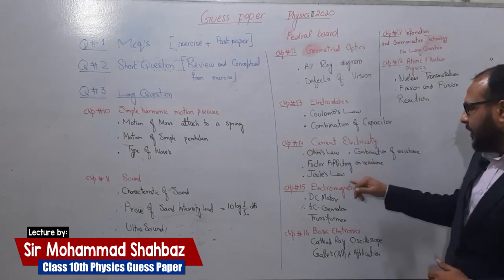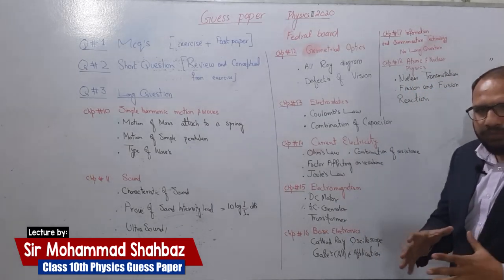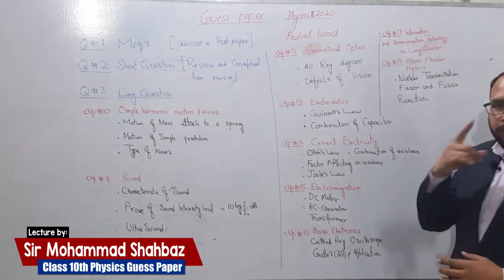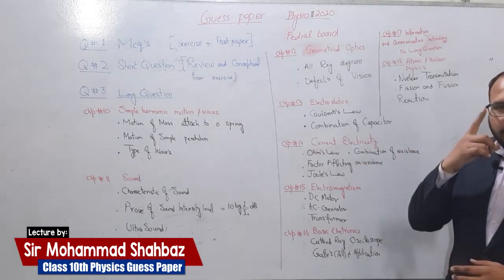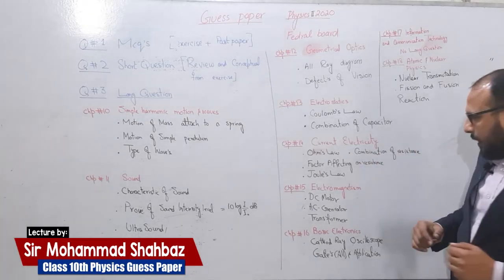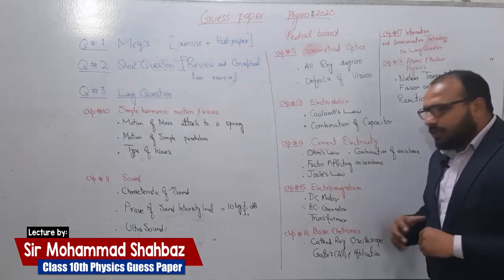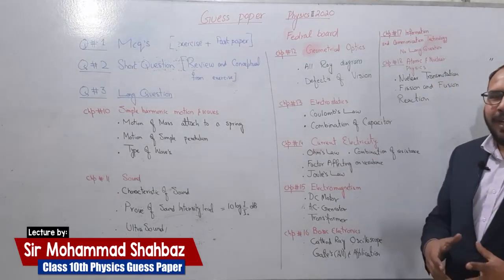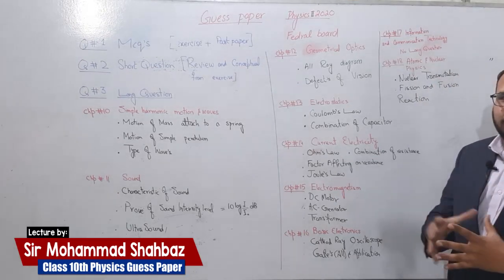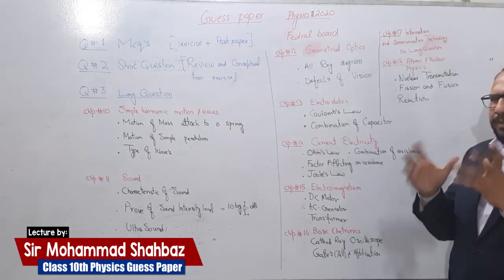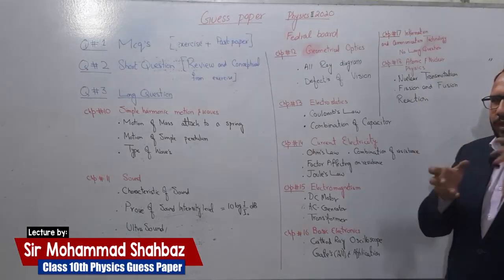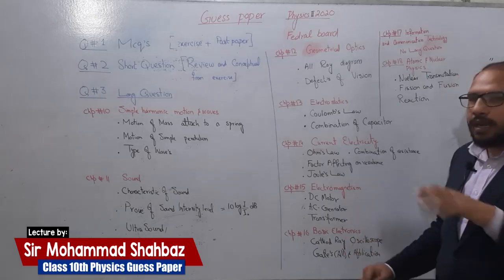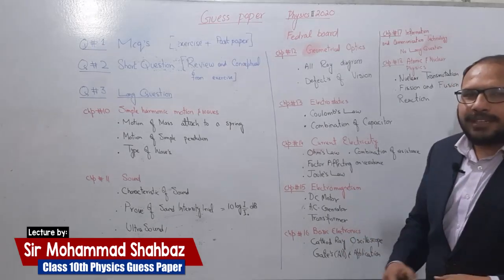For Current Electricity: Ohm's Law, combination of resistors, factors affecting resistance, and Joule's Law — these are proofs and are very important for the long question. For Electromagnetism, it's a tough chapter for students but very conceptual. If you learn it conceptually, the DC motor, AC generator, and transformer become very easy.